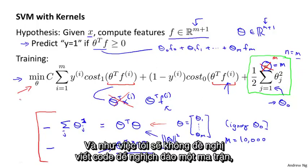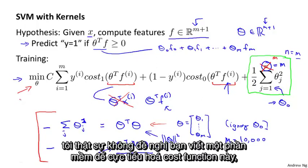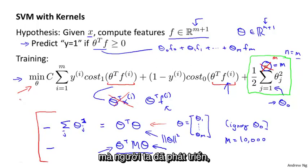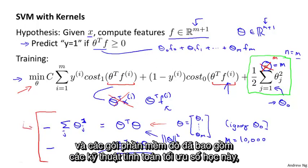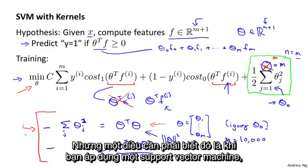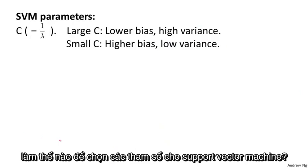Just as I wouldn't recommend writing code to invert a matrix or compute a square root, I do not recommend writing software to minimize this cost function yourself. Instead, use off-the-shelf software packages that people have developed — those packages already embody these numerical optimization tricks. When applying a support vector machine, one important question is how to choose the parameters of the SVM.